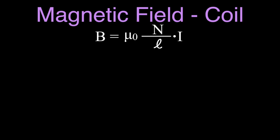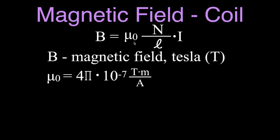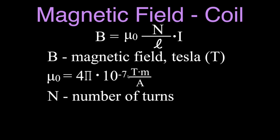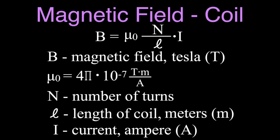There are three different forms of the same equation. The simplest one — the one you'll probably see first in class — says that B is equal to μ₀ times N times I divided by L. B is the magnetic field, measured in Teslas. μ₀ is the permeability of free space, a constant equal to 4π × 10⁻⁷ T·m/A. N is the number of turns or windings — no units. L is the length of the coil in meters, and I is the current running through the coil in amperes.